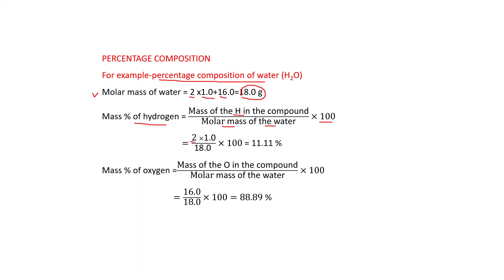Mass percent of hydrogen: 2 atoms of hydrogen multiplied by 1.0 gives 2 — this is the mass of hydrogen in water. Divided by the molar mass of water (18) and multiplied by 100, this comes to 11.11%. Mass percent of oxygen: mass of oxygen in the compound is 16 grams, divided by molar mass of water (18), multiplied by 100, which gives 88.89%.